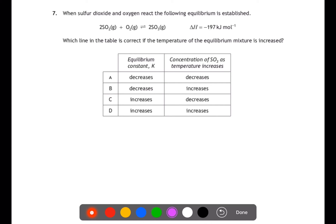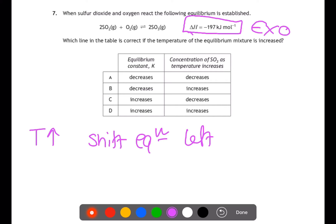Question seven. When sulfur dioxide and oxygen react the following equilibrium is established. Which line in the table is correct if the temperature of the equilibrium is increased? The key here is the enthalpy change which is negative. So this is an exothermic reaction and therefore gives out heat. If you have an exothermic reaction and you increase the temperature, you're going to shift the equilibrium to the left. By shifting this to the left means that your products will decrease, and in this case SO3 is your product. If your products decrease then your value of K will also decrease. So A is the answer.